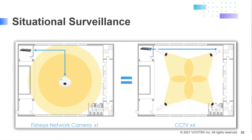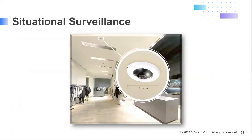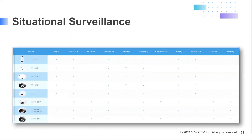We also have different form factors with aesthetic considerations. Here's a list of our fisheye cameras and recommended vertical markets where each model can be deployed based on camera features. You can find this chart and additional information at vivotech.com in our fisheye brochure.